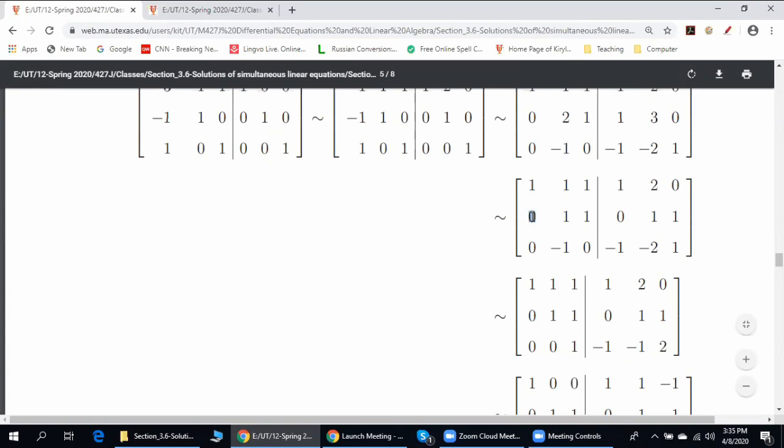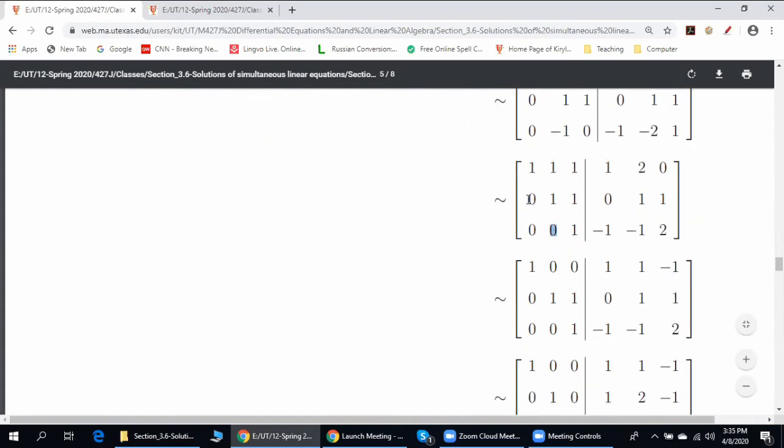How? First, let us add row number two to row number three, zero. Then let us subtract row number two from row number one, zero again.